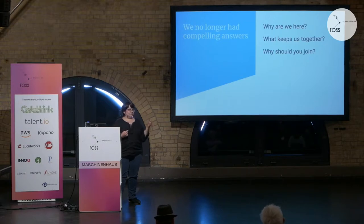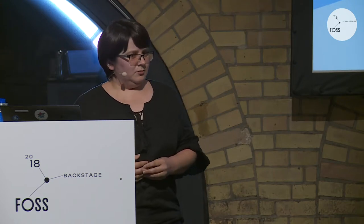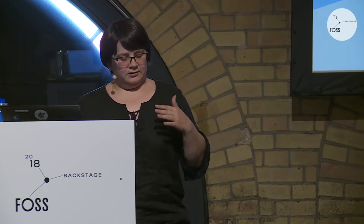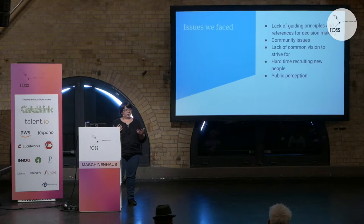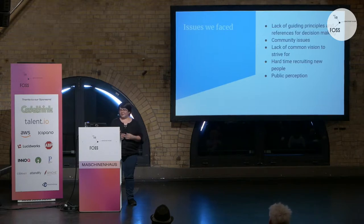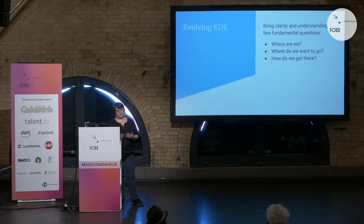All of this together meant that we no longer had really compelling answers when people asked: why are we actually here? Why are we doing this? What keeps us all together as one community, and why should anyone join? There were answers, but they were very fuzzy and it got harder and harder for us to articulate them. A lack of guiding principles meant we lacked a base for many decisions, leading to community issues. A lack of a common vision after we'd more or less solved the first one. That meant we had a hard time recruiting new people, and our public perception was still suffering from KDE 4. A lot of people in the community felt that something had to be done, and that's why we started Evolving KDE in 2015.